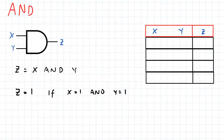There are a number of fundamental logic gates which we will observe in this video. The first one we will be looking at is the AND gate. The AND gate looks like this in circuit topology, and what it says is that output z is equal to x AND y.